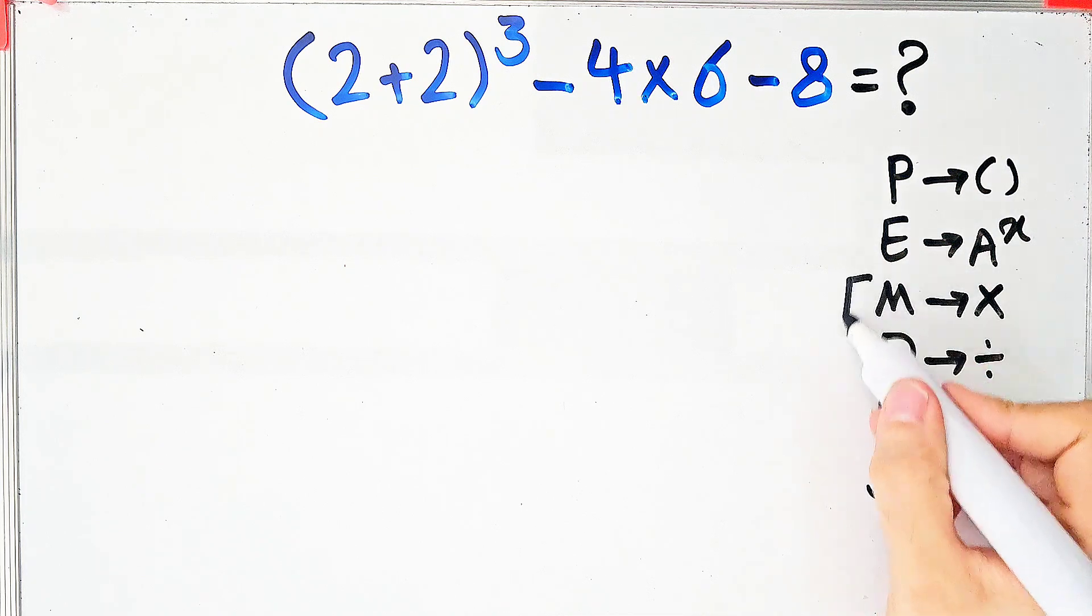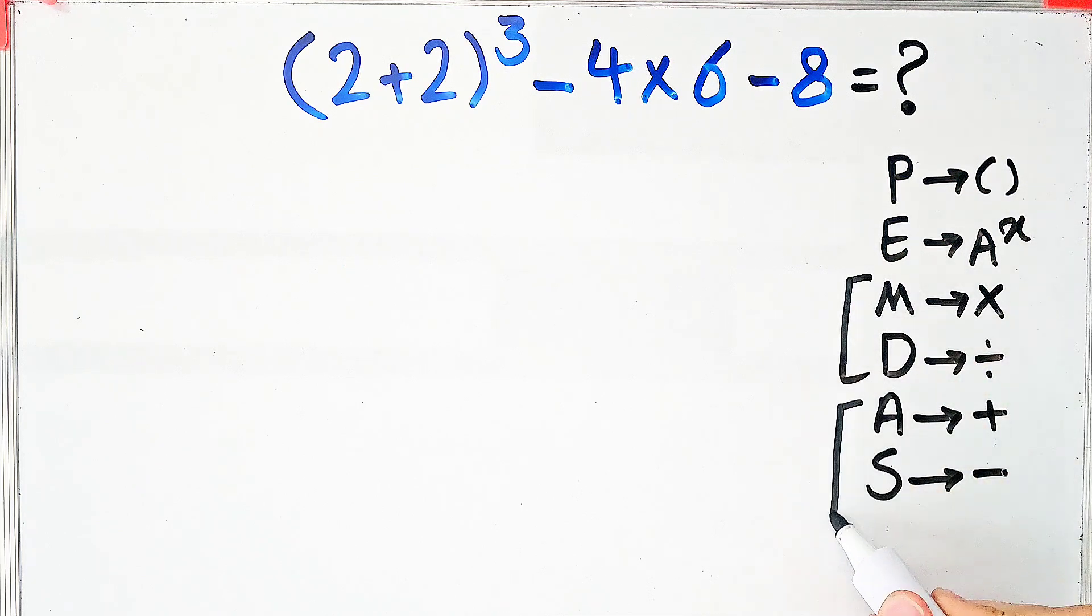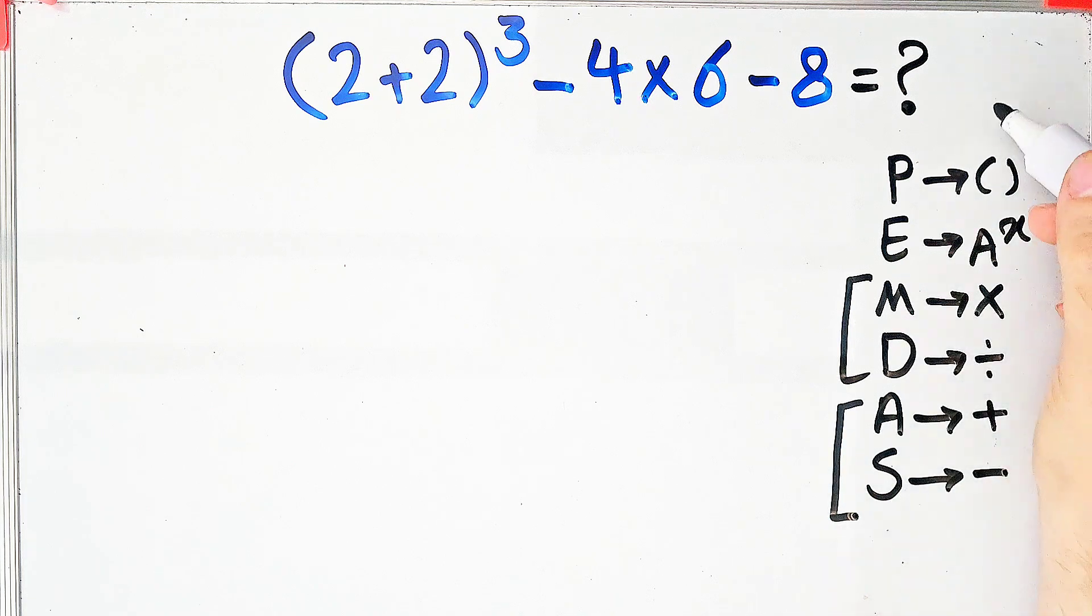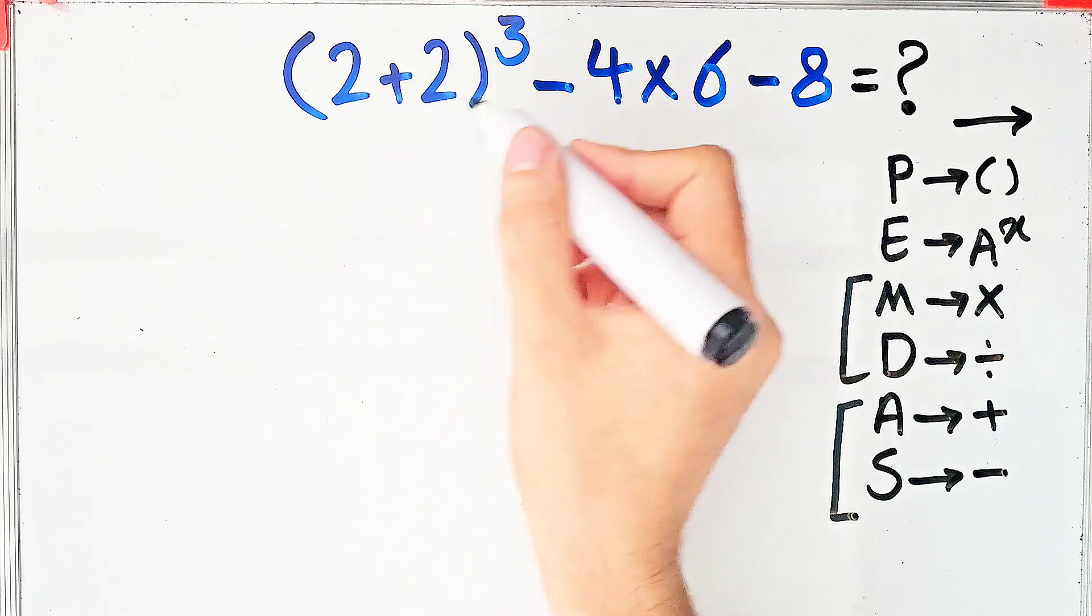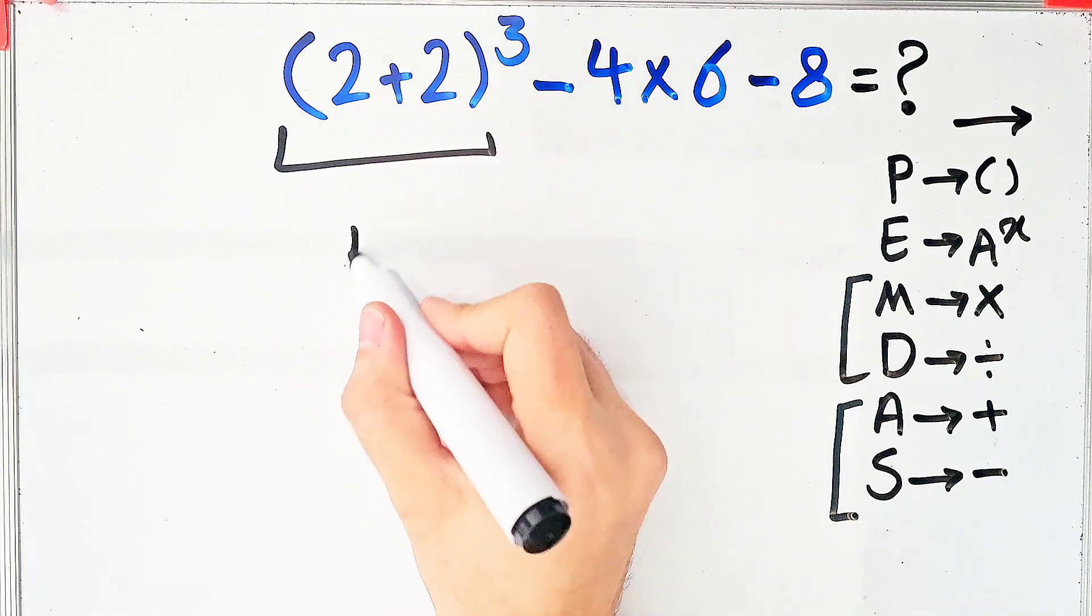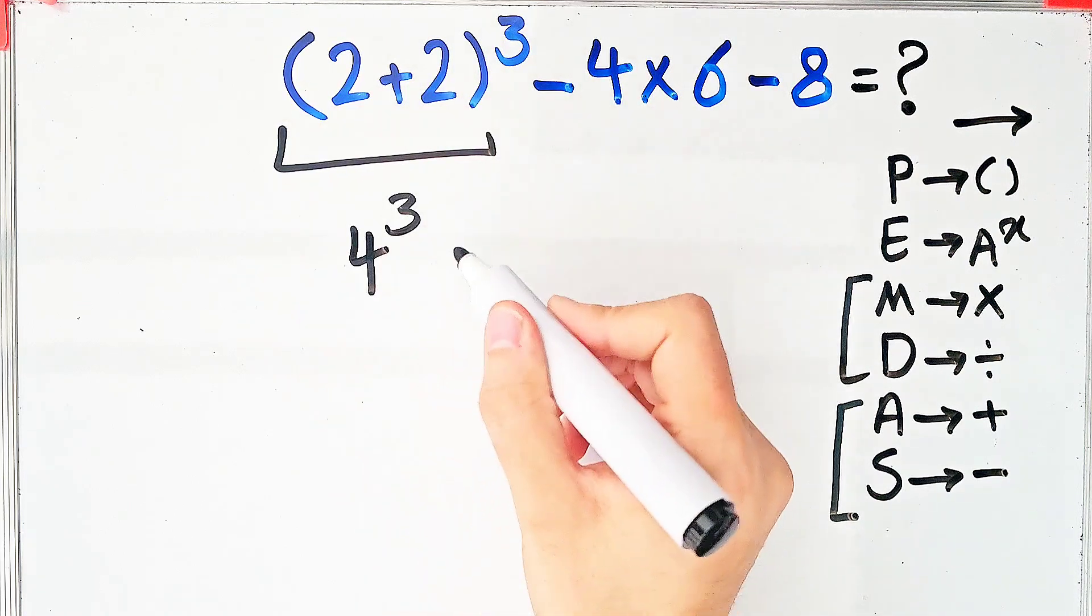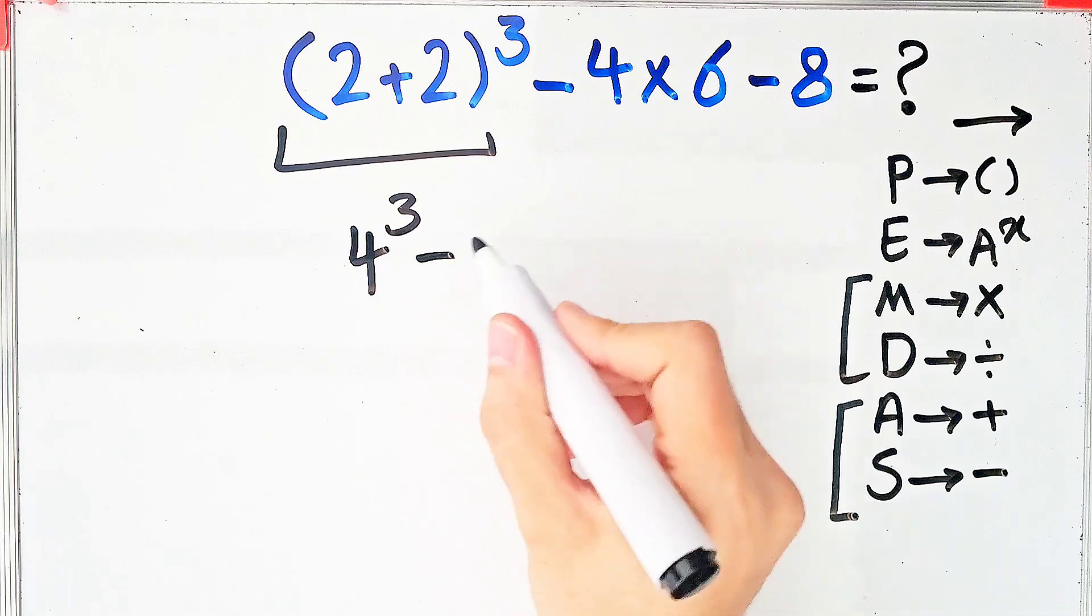Multiplication and division have the same level of priority. Also, addition and subtraction have the same priority. When we have both in an expression, we start from the left and simplify. According to this rule, first we simplify the parentheses. 2 plus 2 equals 4.